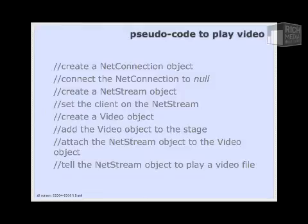If we were going to stream from Flash Media Server, we would not connect to null — we'd connect to the Flash Media Server. Next, we would need to create a NetStream object. New to ActionScript 3, we need to define a client on that NetStream. Then we create a video object to display the FLV on our stage, add the video object to the stage, attach the NetStream to the video object, and then tell the NetStream to play a video file.